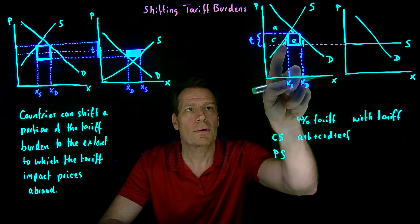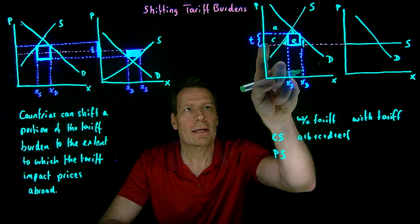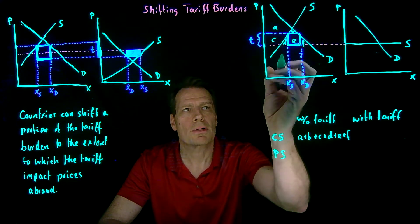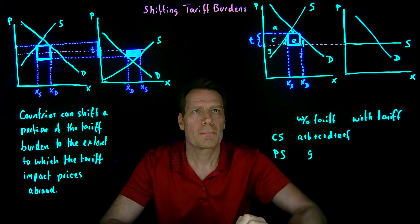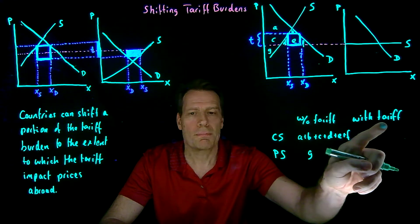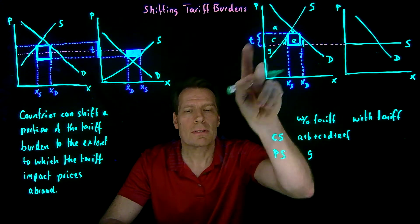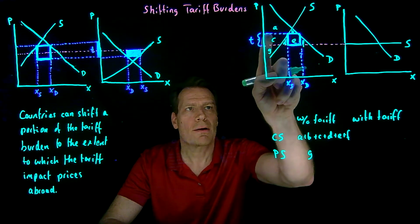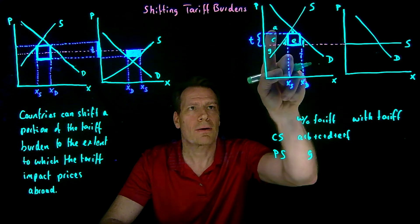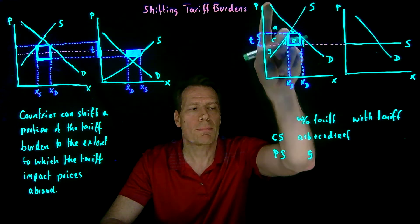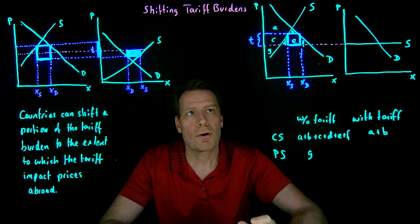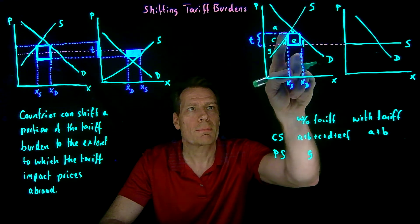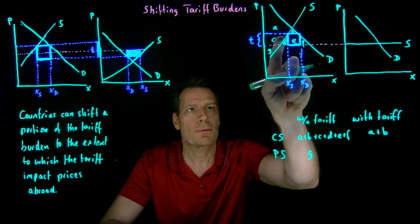Producers would produce very little and get everything below that price down to their supply curve, so that's just this little area G. After the tariff is imposed, the price has risen, so consumers now pay this higher price and get only area A plus B — everything above that price up to the demand curve. Firms sell at the higher price and get everything below that price down to the supply curve, which is C plus G.